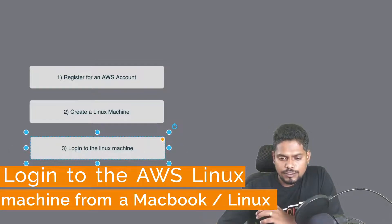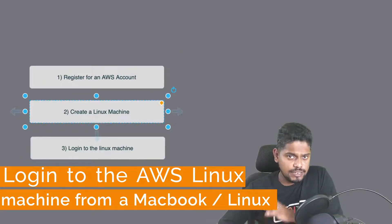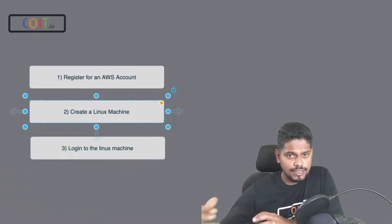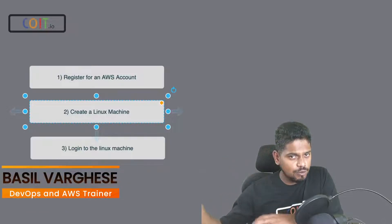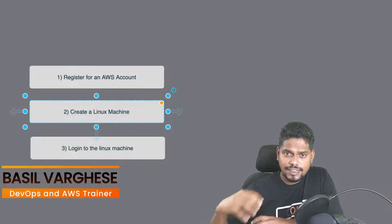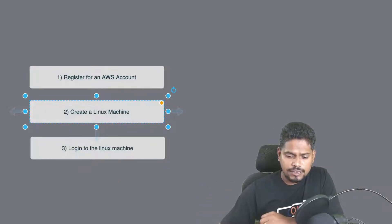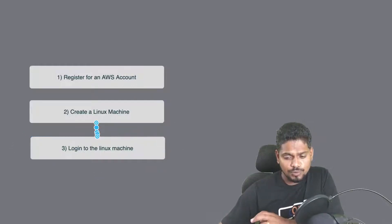The next thing we want to do: we are done with registering the AWS account and we created a Linux machine in the AWS account. In my case the machine is located somewhere in Mumbai. The next step is I'm going to log into that machine remotely from my laptop.